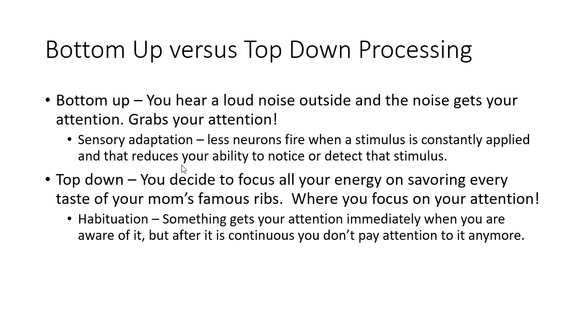Top-down processing is where your attention is focused on getting a sensation or determining a specific sensation — it's coming from your brain. For example, if I'm eating my mom's favorite ribs and I'm trying to savor every flavor while tasting them, that would be top-down processing because I'm choosing to focus my attention on something specific.